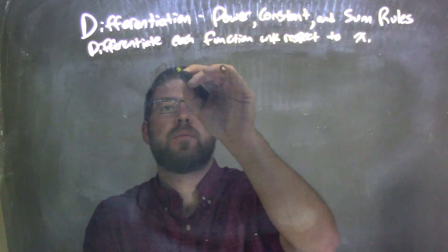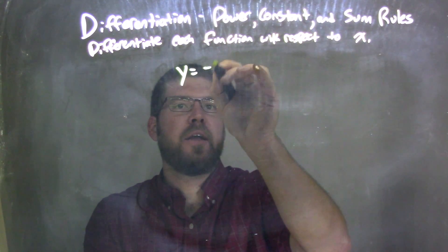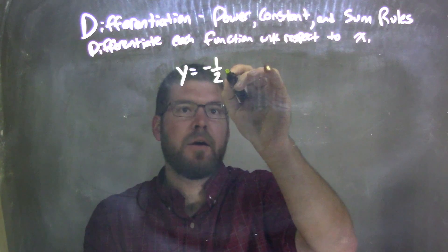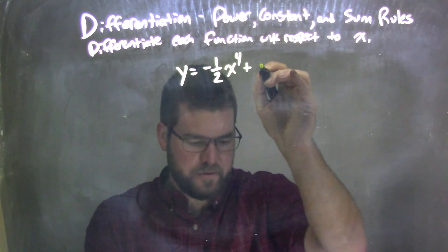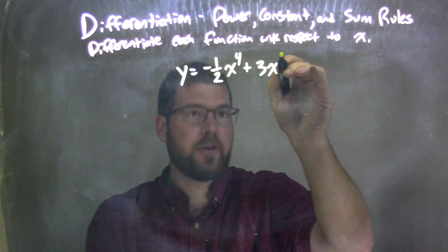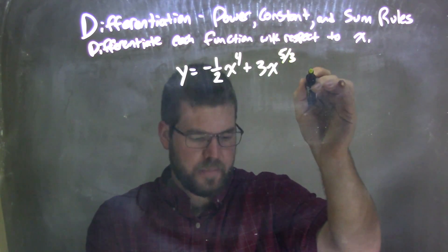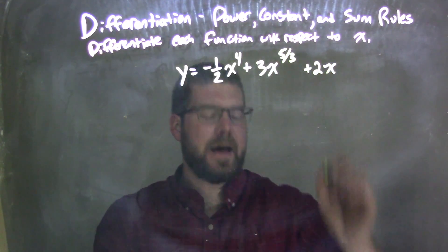If I was given this function, y equals negative one-half x to the fourth plus 3x to the five-thirds power plus 2x.